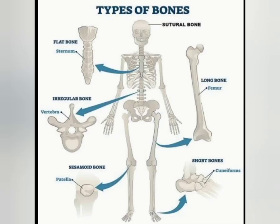Bones are classified as long, short, irregular, flat, and sesamoid. Long bones consist of a shaft and two extremities; these bones are longer than they are wide. Examples include the femur, tibia, and fibula. Short, irregular, flat, and sesamoid bones have no shafts or extremities and are diverse in shape and size. Examples of short bones are carpals, irregular bones are vertebrae and some skull bones, flat bones are the sternum, ribs, and most skull bones, and sesamoid bones are the patella or kneecap.